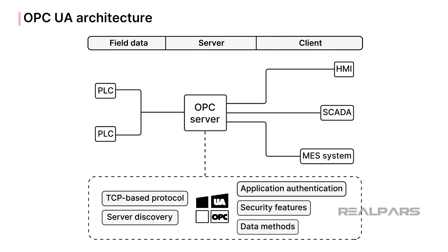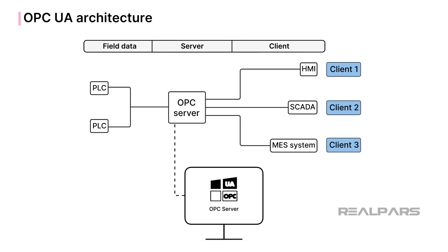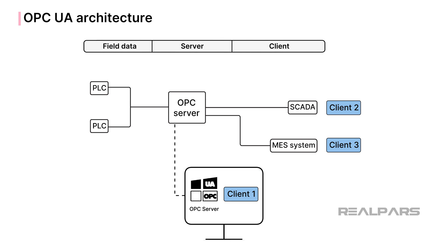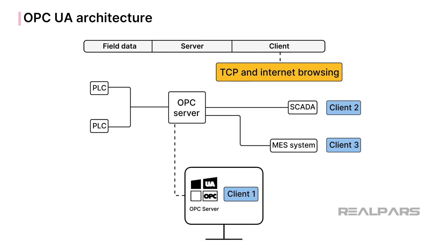The OPC UA-based software installation is made up of a binary TCP-based protocol, plus a method for allowing the OPC UA server to be discovered by other computer applications across the network. It also includes application authentication, other security features, and data methods to access devices such as PLCs. The OPC UA client software can be loaded on the same PC as the OPC UA server, on a different machine on the same network, or on a PC anywhere on the internet or in the cloud. Because the OPC UA client uses TCP and internet browsing protocols to connect to the OPC UA server, the OPC UA client can literally be located anywhere.